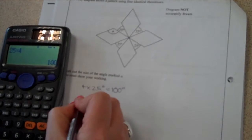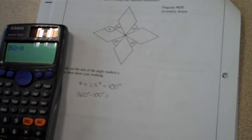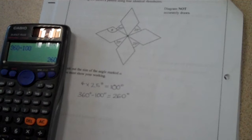So if I then take that away from 360 degrees, that tells me what I've got left for the other four angles. So 360 degrees minus my hundred degrees means that I've got 260 degrees left.